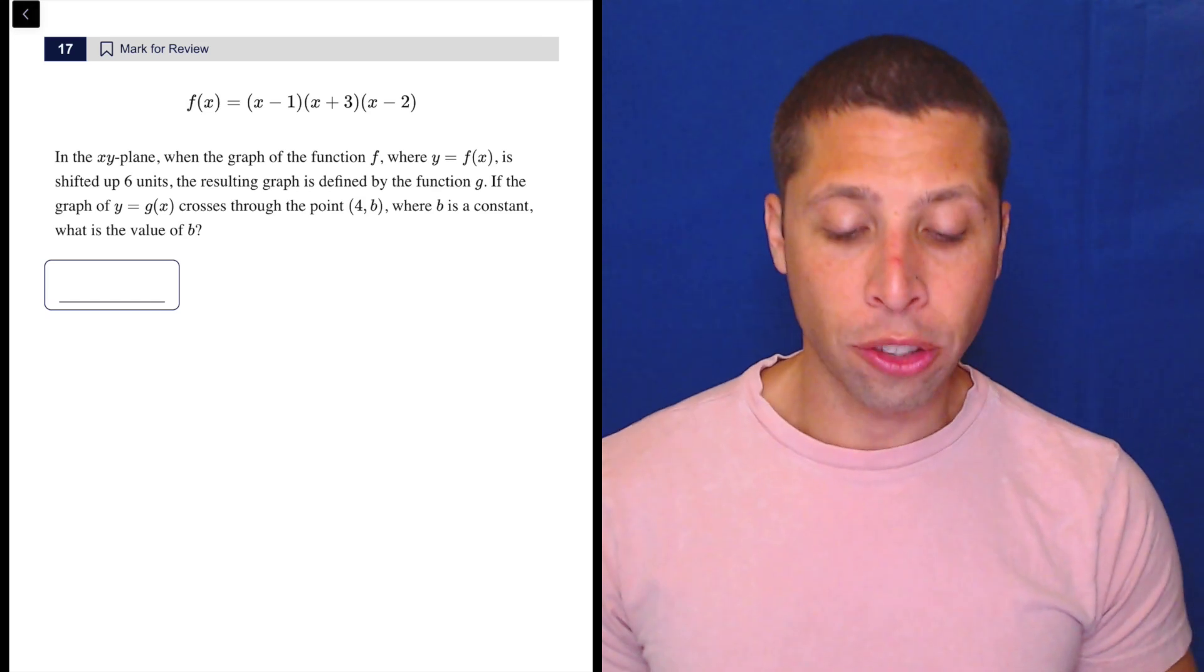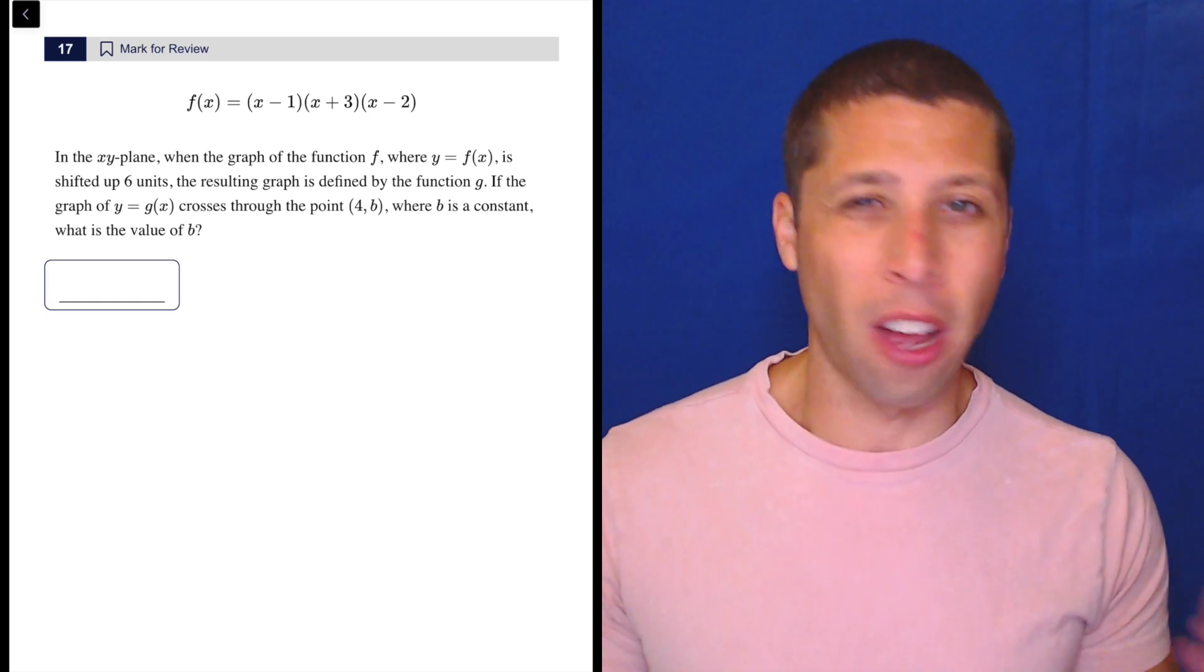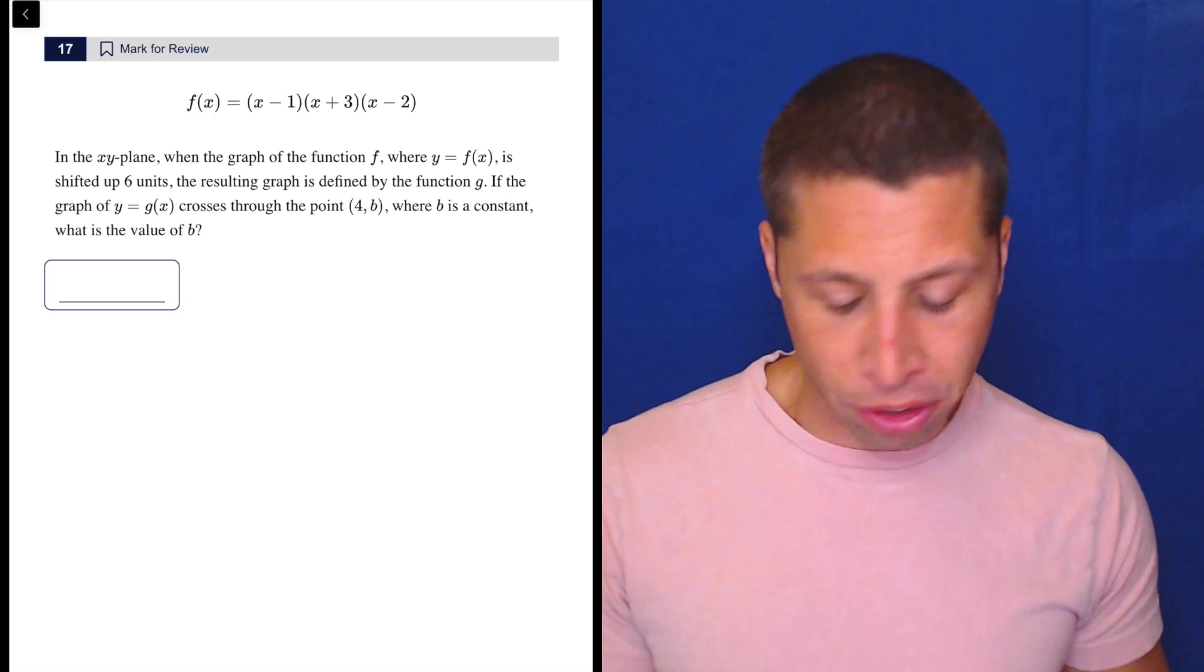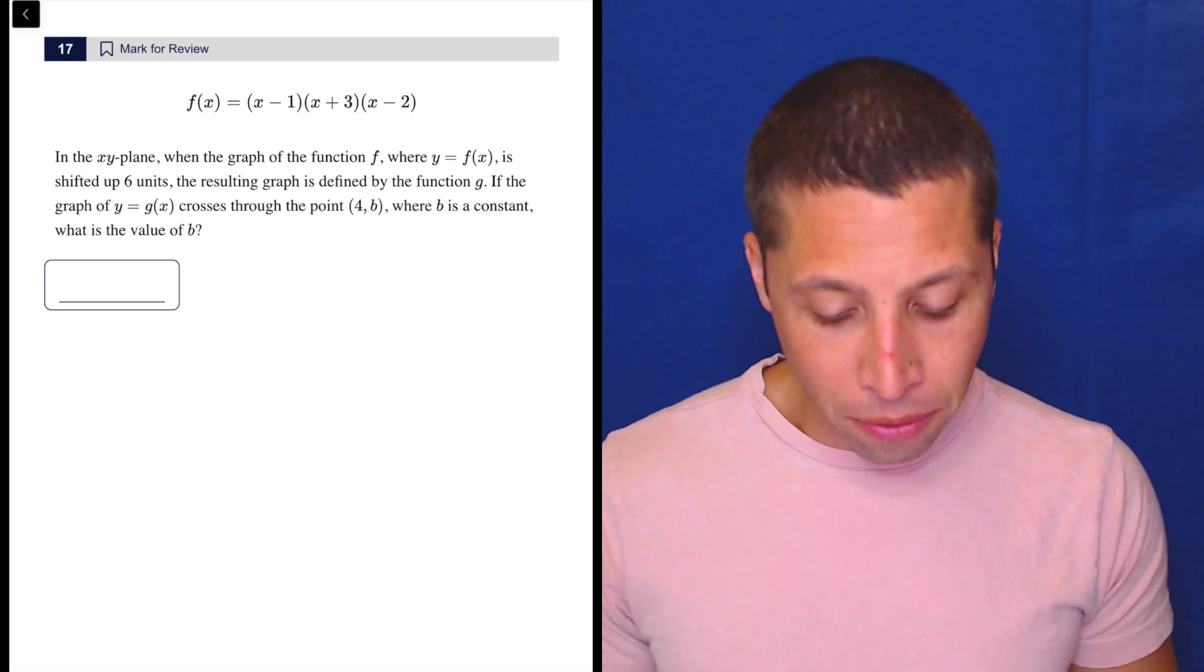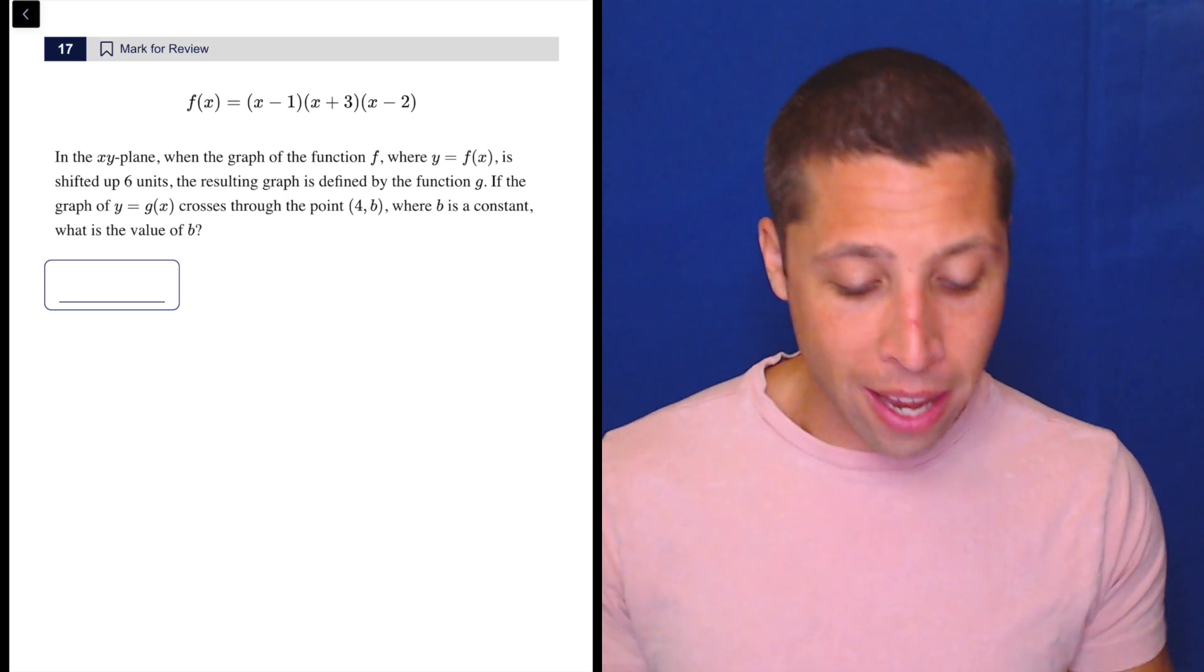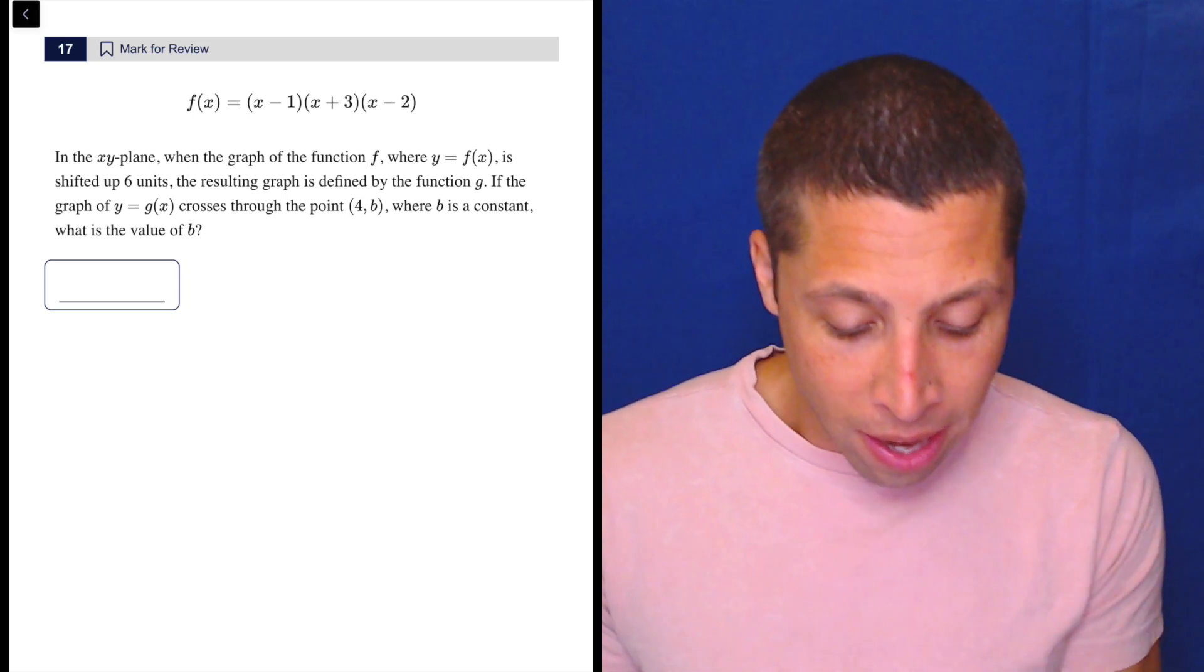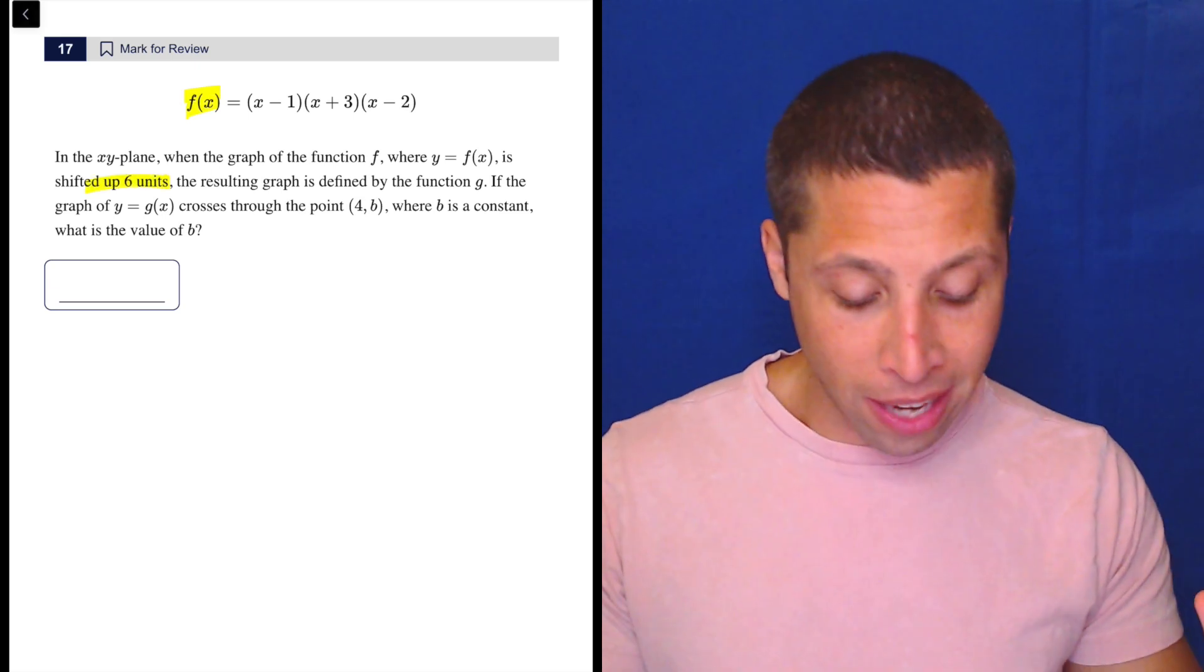There are a few different ways to do this question. I think for most people taking a PSAT, the hardest part is just understanding the language here. Most of it doesn't actually matter. In the XY plane, when the graph of the function f, where y equals f(x) is shifted up six units, the resulting graph is defined by the function g. Most of that is just saying if we move this thing up six units, we get a new thing. That's all it's saying.